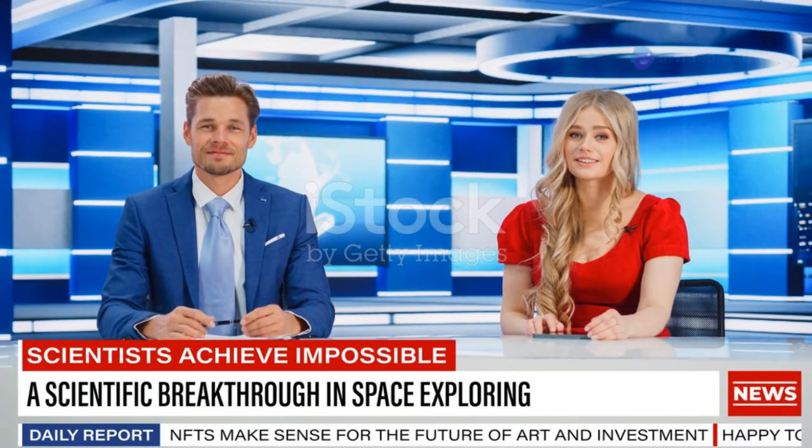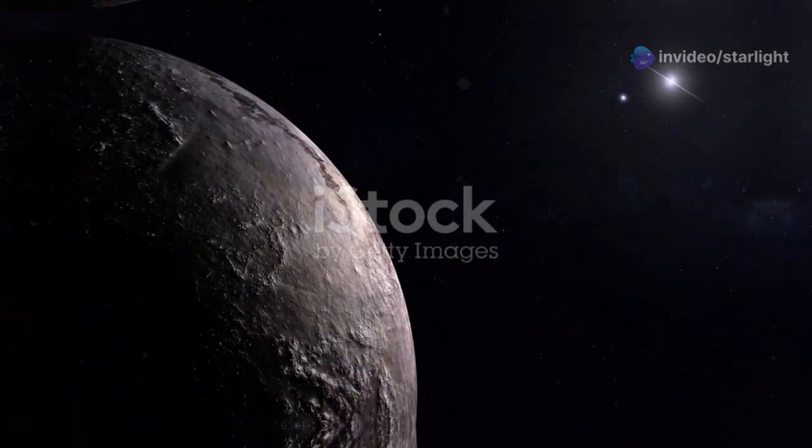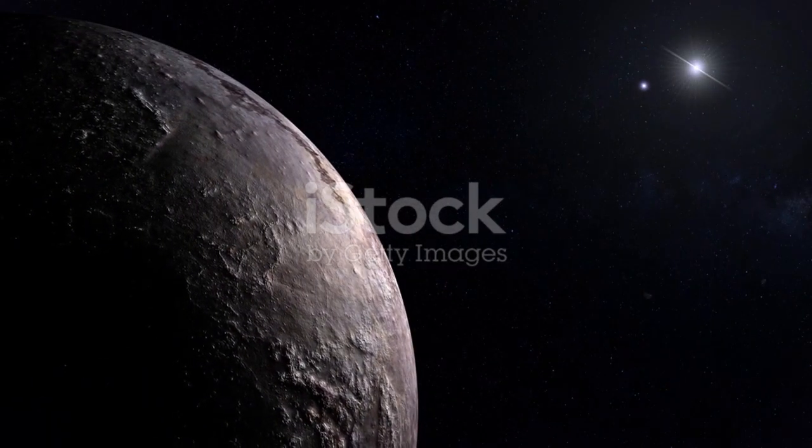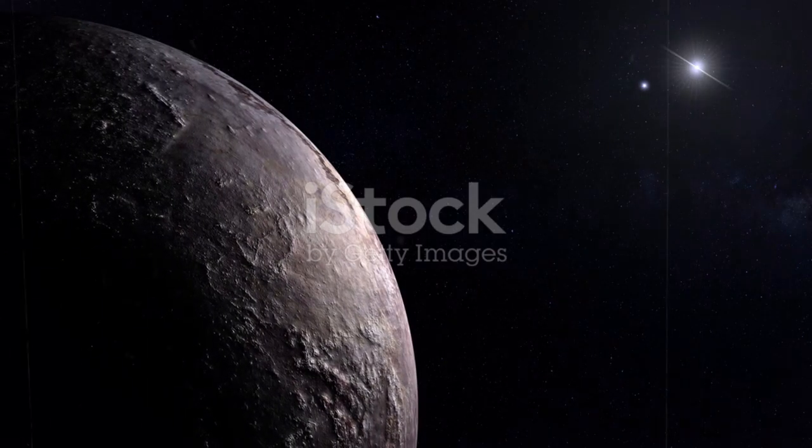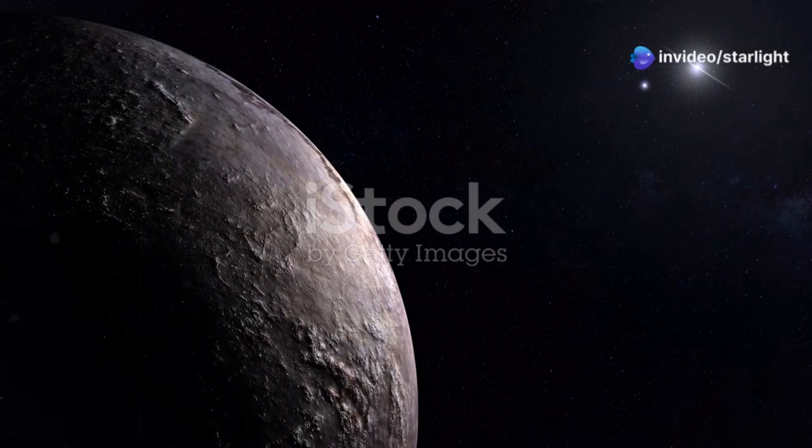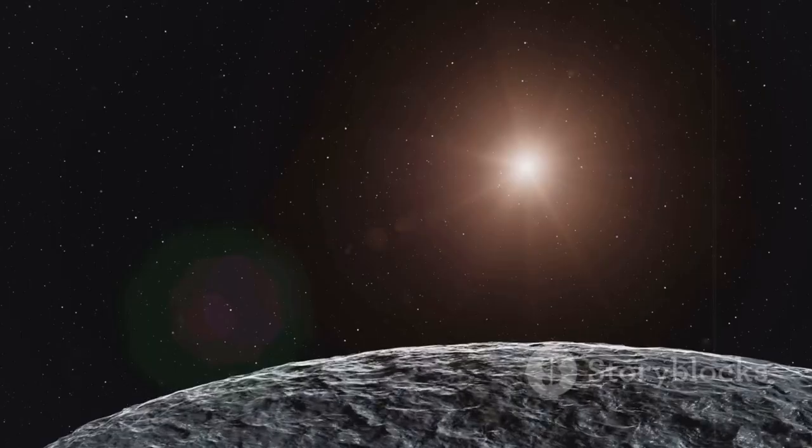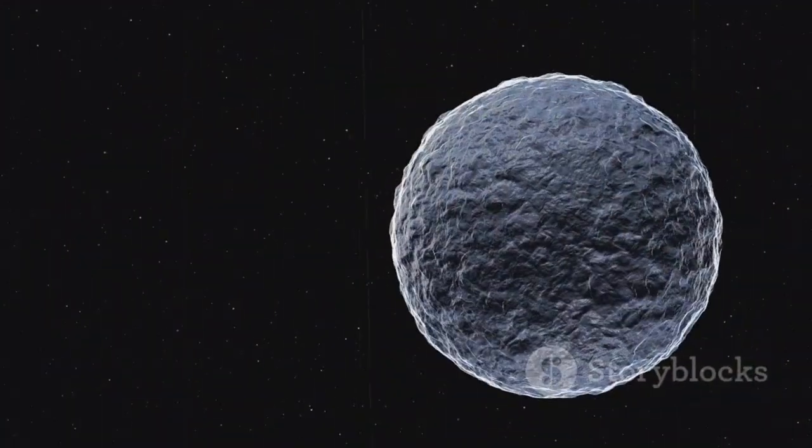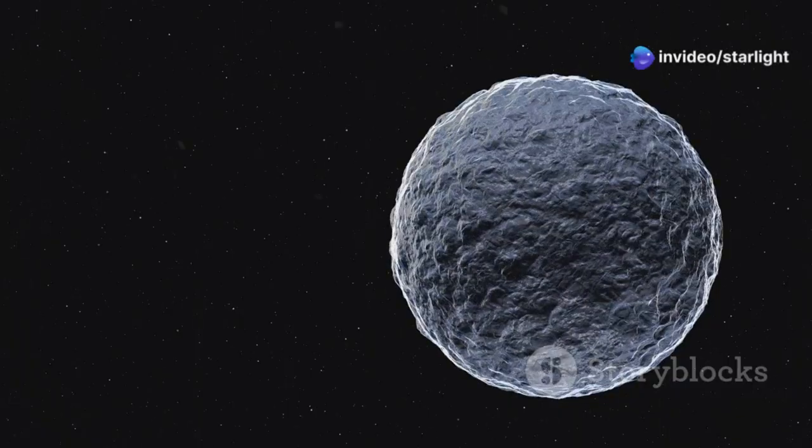Proxima Centauri B: our nearest extraterrestrial neighbor. This rocky world, just slightly larger than Earth, has been a source of fascination for astronomers since its discovery in 2016. The exoplanet resides within the habitable zone of Proxima Centauri, meaning liquid water could exist on its surface. The possibility of water, a key ingredient for life as we know it, propelled Proxima B to the forefront of our search for extraterrestrial life.